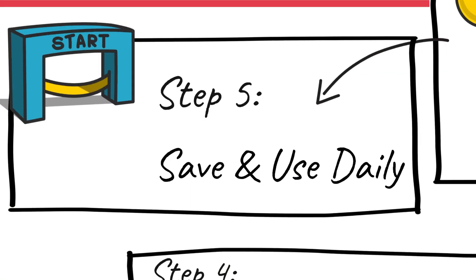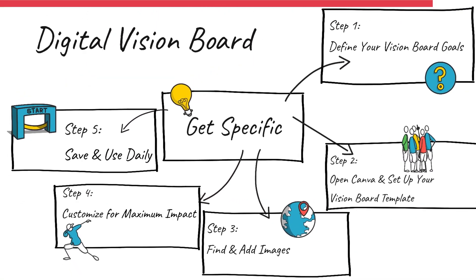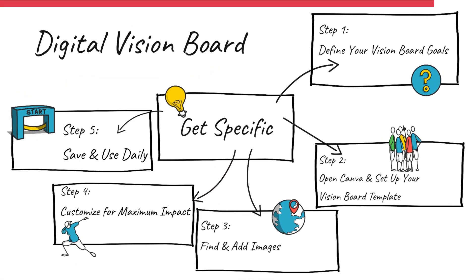Now you know how to create a powerful digital vision board using Canva to help you stay focused and motivated towards your goals. Let's recap: Step one, define your goals and your vision. Step two, set up your Canva design — desktop, phone, printable, or all. Step three, add inspiring images from Canva, Pinterest, or Unsplash. Step four, personalize it with affirmations, colors, and personal photos. Step five, save it as a wallpaper or print it for daily motivation.